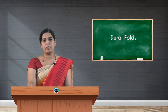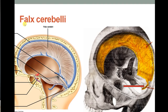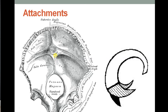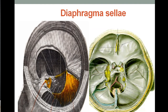Coming to the next dural fold — falx cerebelli. It is a small sickle-shaped fold of dura mater with its base above, attached to the inferior aspect of the tentorium cerebelli, and the apex directed downward, blending with the posterior margins of the foramen magnum. Its attached margin is attached to the internal occipital crest, extending from the internal occipital protuberance to the foramen magnum.